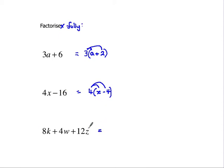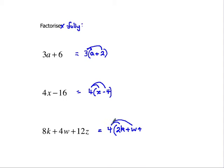Same again here, although the question is just a little bit longer. The common factor in each of those is again 4, so I'm going to take the 4 outside the brackets. 4 lots of something will be 8k — 4 lots of 2 gives us 8, so 4 lots of 2k gives us 8k. Then 4 lots of something to give us 4w — that's just w. And 4 lots of something to give us 12z — that's just 3z.